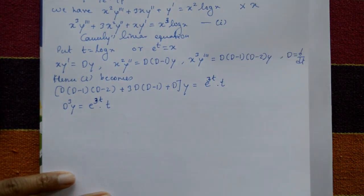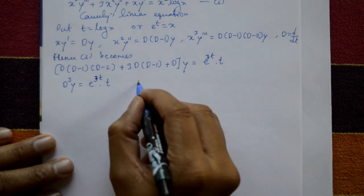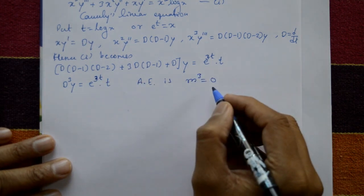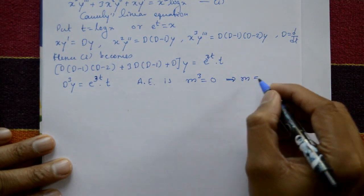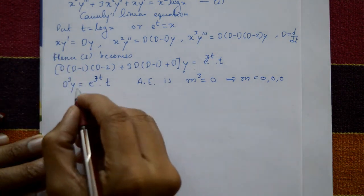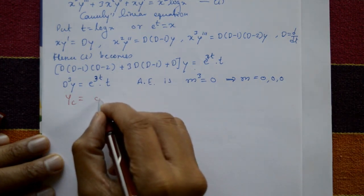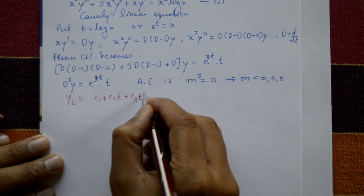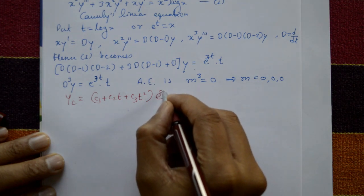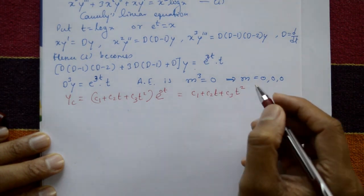Now find the complementary function first, then the particular integral. For the complementary function, find the roots. The auxiliary equation is m³ = 0, since the right-hand side is zero. The roots are m = 0, 0, 0 — all three roots are equal to zero. For three equal roots, the complementary function is yc = c₁ + c₂t + c₃t².